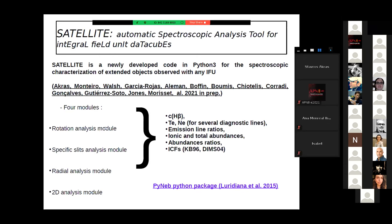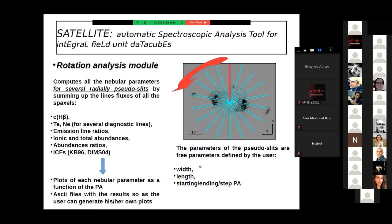The current version of the code has four modules: rotation analysis, specific slits analysis, radial, and 2D analysis. Each of these modules compute all the physical parameters: extinction, temperature, electron density, emission lines, abundances, and ICFs. And for these measurements, we have implemented the PyNeb Python package.